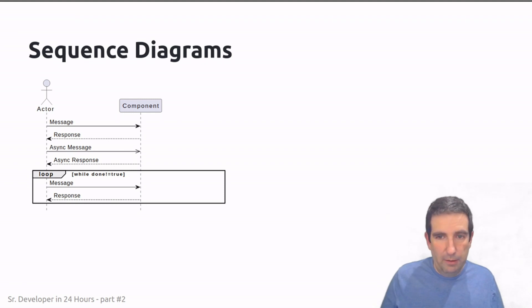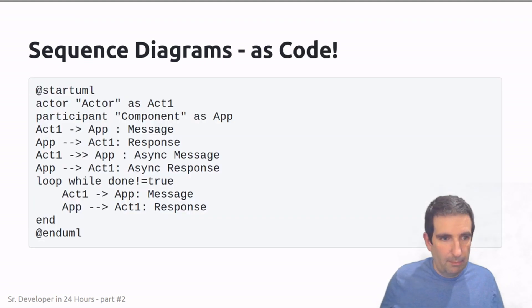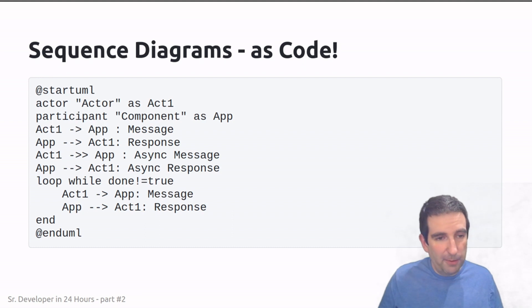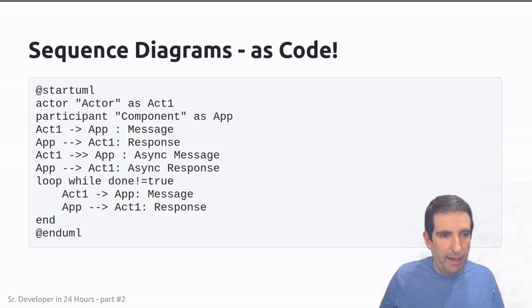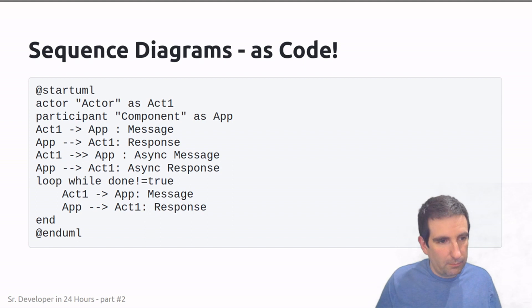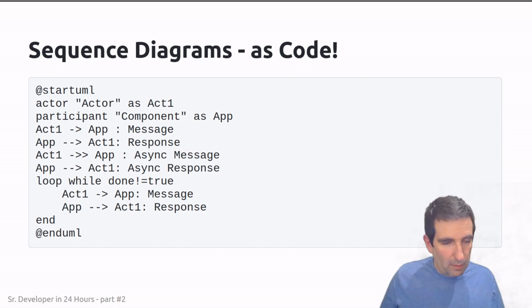One of the coolest things about sequence diagrams is that we can represent them as code, depending on which tool we're using. For example, this is a sample snippet of PlantUML, which allows you to create a bunch of UML diagrams — this one in particular is for sequence diagrams. In here we can define actors and participants, which are the boxes shown at the top — one is a box, the other is a stick figure — and these are the components that play a role.